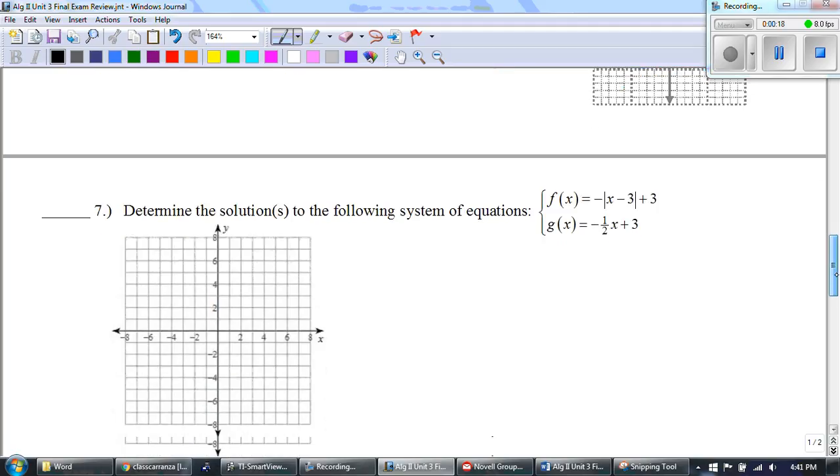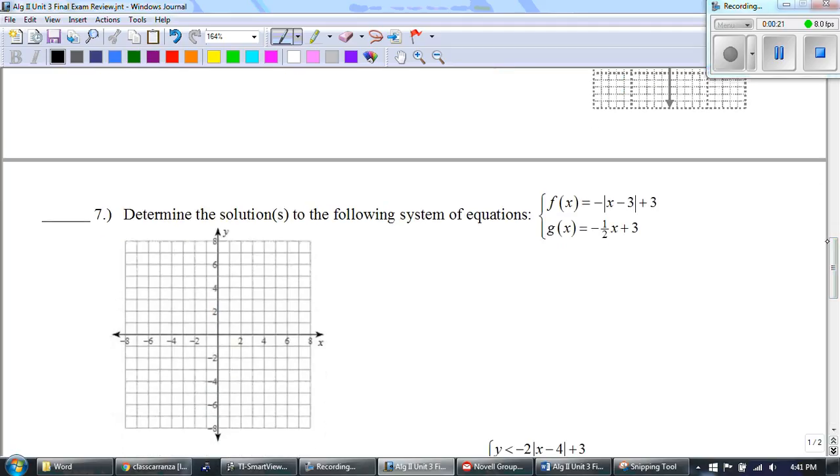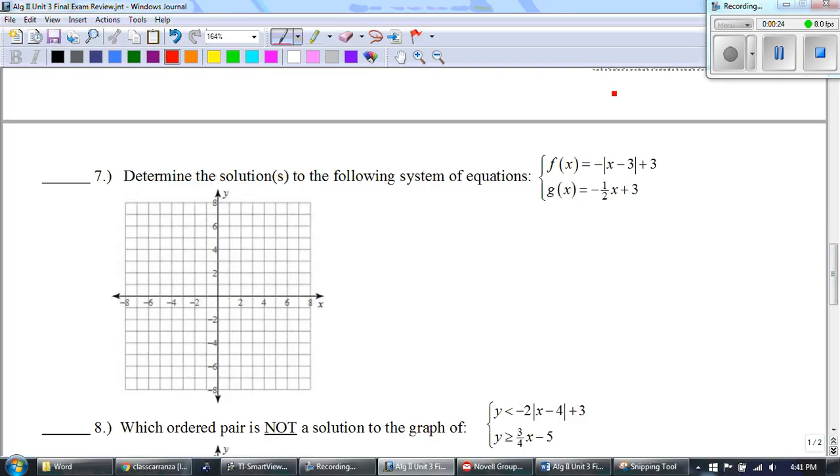Alright, so determine the solutions to the following system of equations. Now first thing I notice about that f(x) is that yes, there's an absolute value, so the negative is telling me that it's reflected, and it's negative 1, so I have to go down 1 over 1. And then my vertex, I take the opposite of negative 3, so at (3,3) is where I start.